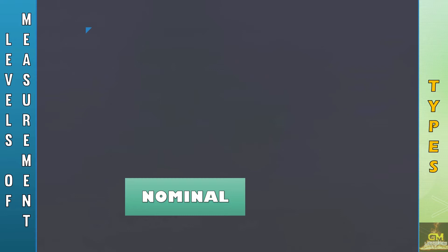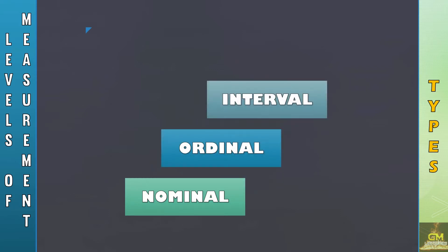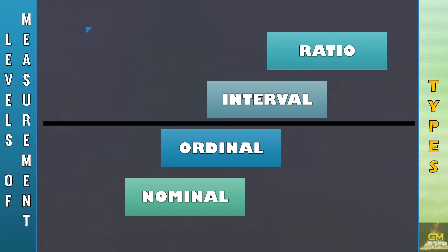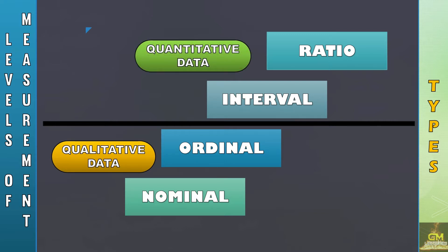First, we have the nominal level of measurement, the ordinal level of measurement, the interval level of measurement, and the ratio level of measurement. It is worth noting that both nominal and ordinal would focus on qualitative data, whereas interval and ratio level of measurement would focus on quantitative data.